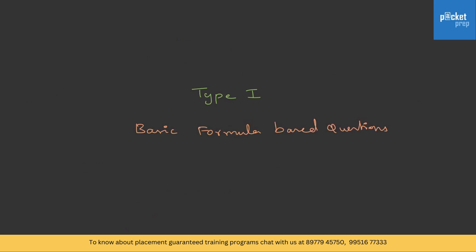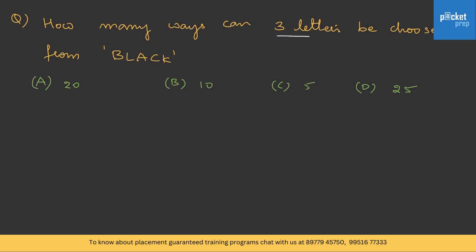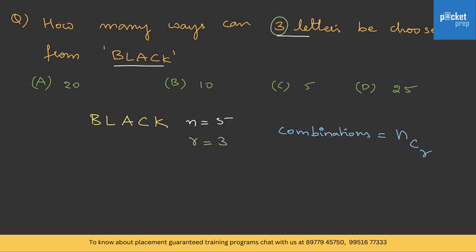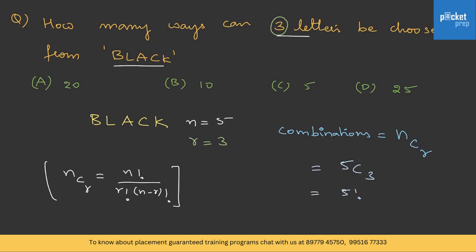Let us get into Type 1 based on the basic formula. How many ways can three letters be chosen from the word 'BLACK'? The letters are B, L, A, C, K — so n = 5 — and we need to select r = 3. The formula for combinations is nCr = n! / [r! × (n − r)!]. So 5C3 = 5! / (3! × 2!) = (5 × 4) / (2 × 1) = 10. Therefore the option is B.